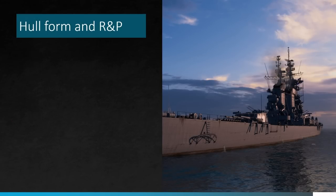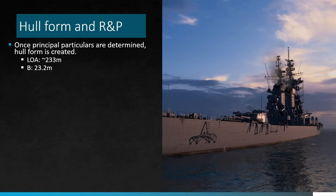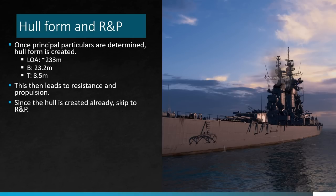Now with principal particulars set, the next step is creating a hull form. You obviously want a hull form that hits the values you require — length, beam, depth, draft — but also things like prismatic coefficients, and you want the lines of your hull form to be relatively fair. Based on the vessel, we have a length overall of 233 meters, beam of about 23.2 meters, and draft of 8.5 meters. Since the hull form is already created by Wargaming from some drawing they found, we can skip hull development and jump into resistance and propulsion.